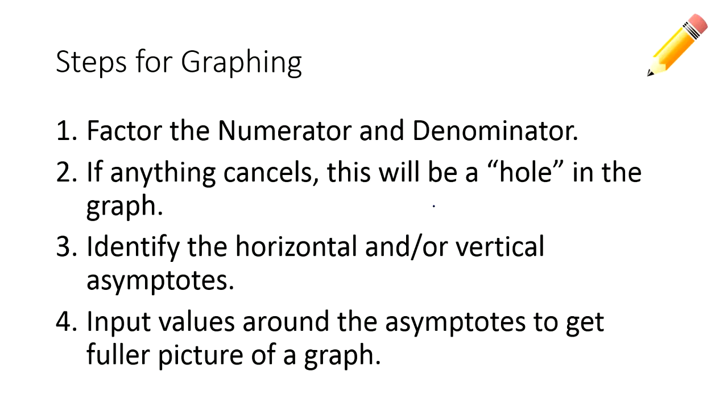Here are the steps we're going to take today. First, factor the numerator and denominator. If anything cancels, that will be a hole in the graph — that's a discontinuity, so x cannot equal that value. Then we identify our horizontal and vertical asymptotes, since you can have both or just one. Finally, we input some values around the asymptotes to get a full picture of our graph.